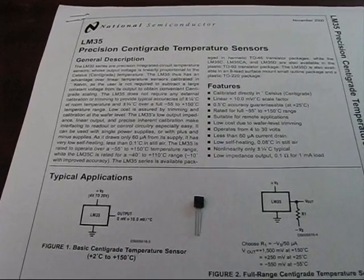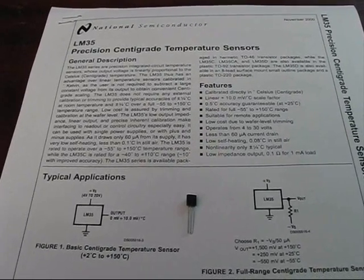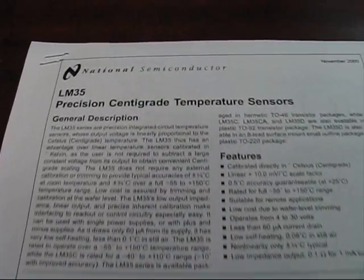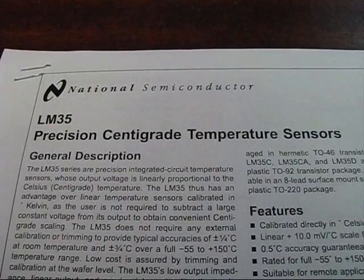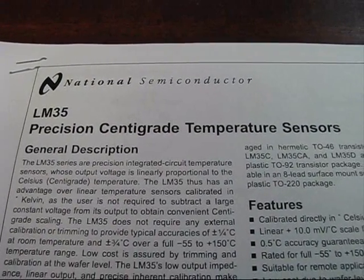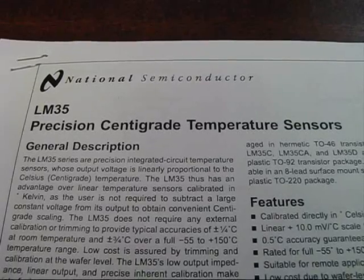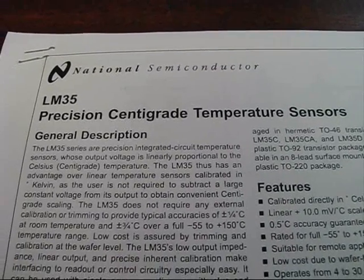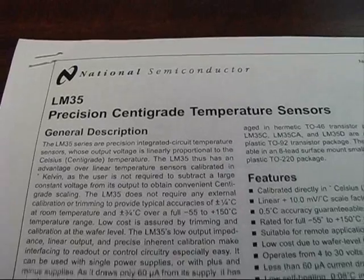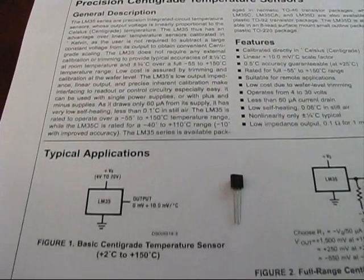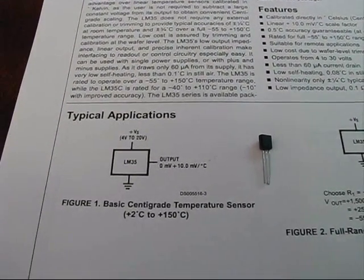Okay, so first thing we need to do is actually have a way of measuring what the temperature is. In this case, I've selected the LM35 to do that job. It's a precision centigrade temperature sensor, or Celsius. Now, of course, to go from Celsius to Fahrenheit, it's just a calculation. However, you'll see why this one is actually called a Celsius device.